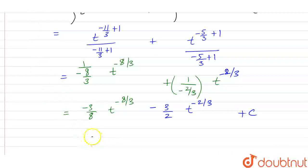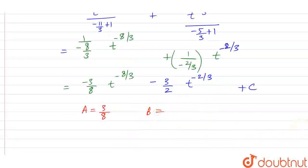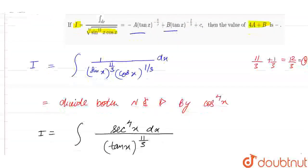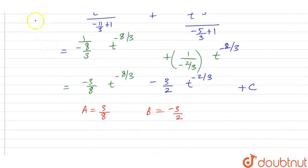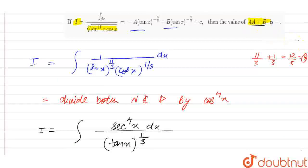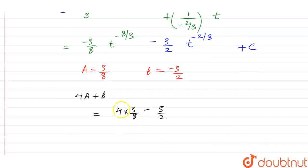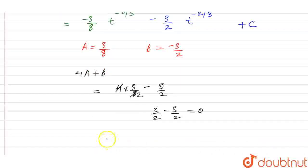Comparing terms, we get a equal to 3/8 and b equal to minus 3/2. So we have to find 4a plus b: 4 times 3/8 is 3/2, and plus minus 3/2 gives 3/2 minus 3/2, which equals 0. So 4a plus b is equal to 0. This is the final answer.